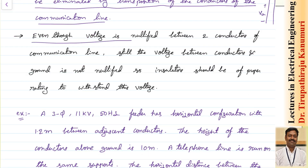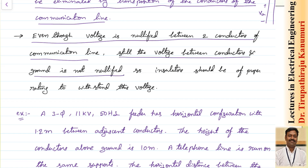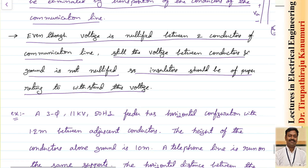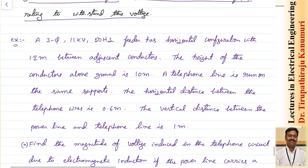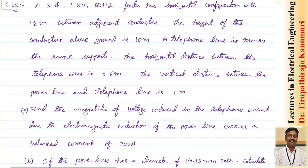Even though the voltages are nullified between the two conductors of the communication line, the voltage between the conductors and ground is not nullified. So the insulator should be of proper rating to withstand this voltage. To justify this statement, let us take one example so that it will be completely clear.